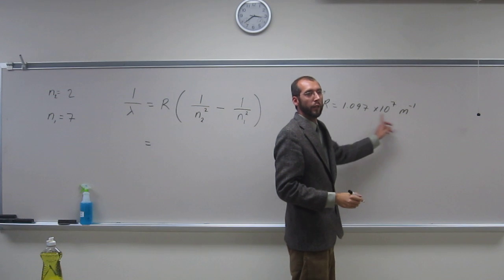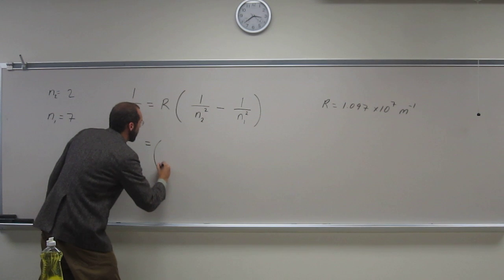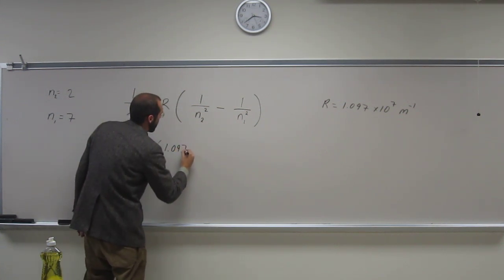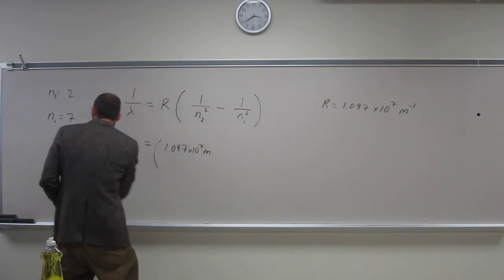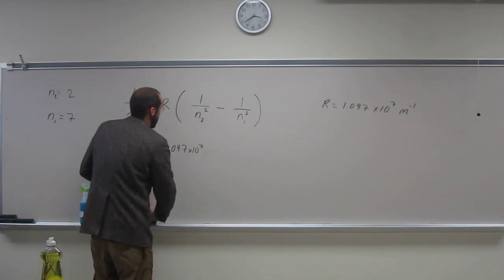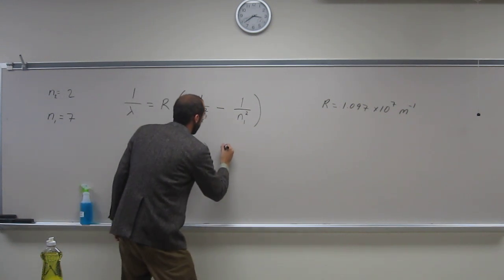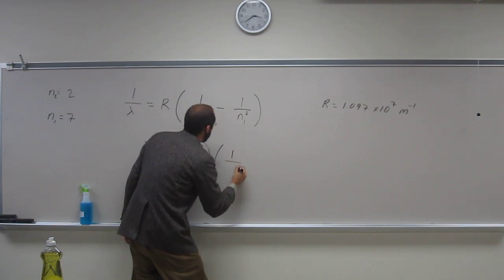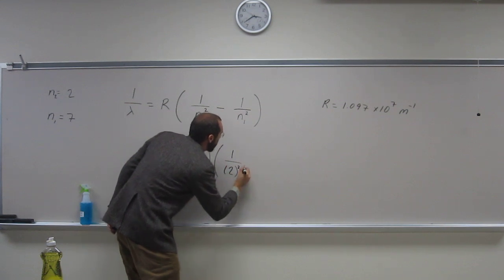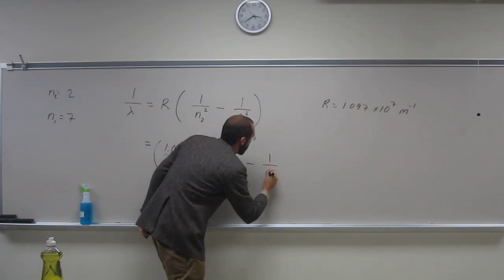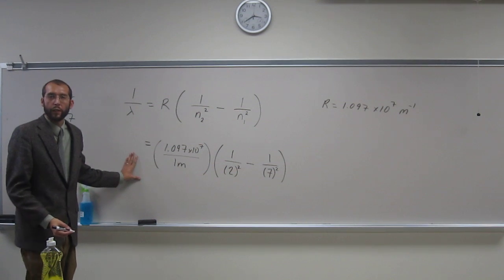Remember that per meters is divided by 1 meter. Let's take that meter down to the bottom. So N equals 2, plug it in, so it's 2 squared minus 1 over 7 squared like that. So everybody was able to get to there.